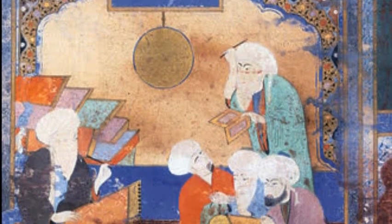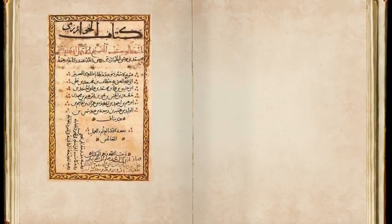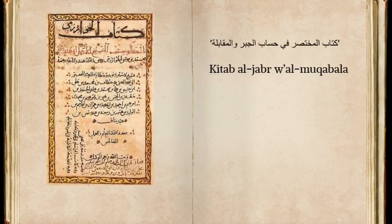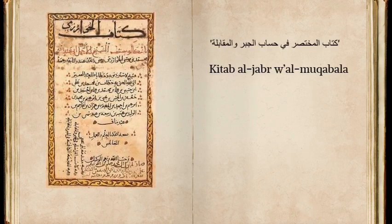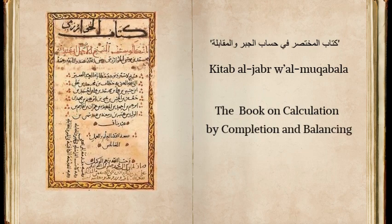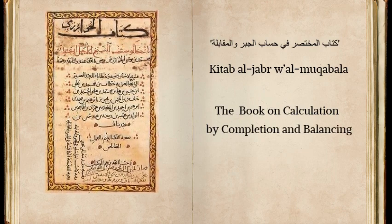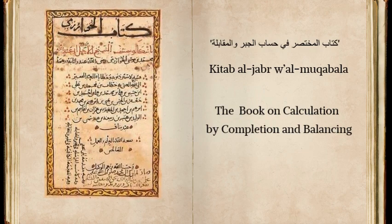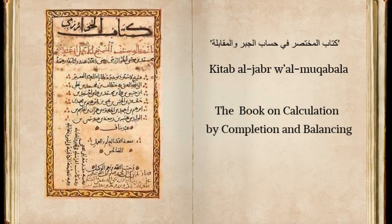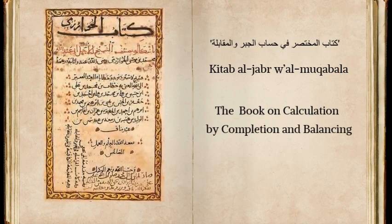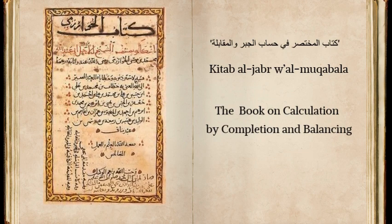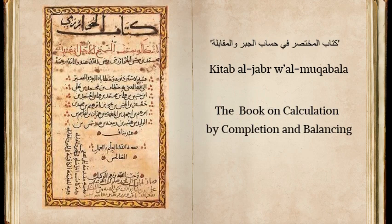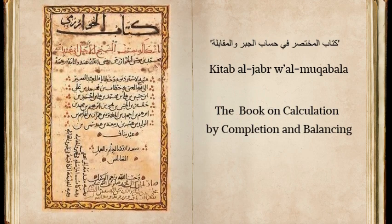The book was commissioned by the Abbasid Caliph al-Mamun in the year 820 and was titled Kitab al-Jabbar wal-Muqabala, or The Book on Calculation by Completion and Balancing. It was a foundational text for algebra, since this is the work in which algebra was, for the first time in history, conceived as a mathematical discipline independent of geometry and arithmetic.